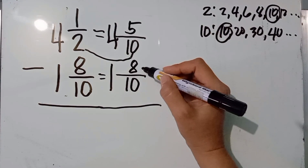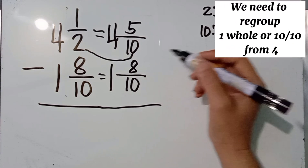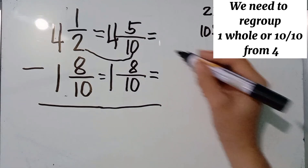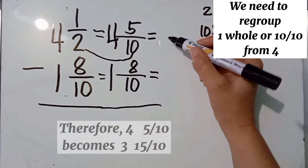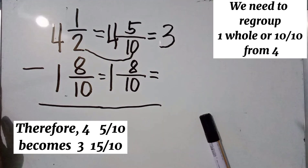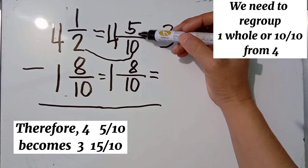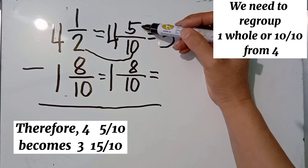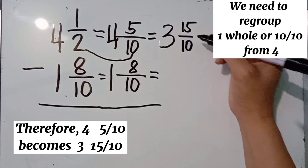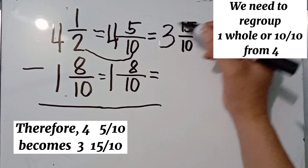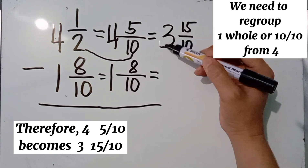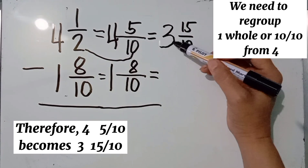5 minus 8 cannot be done, so we are going to regroup. We borrow one whole number from 4, so 4 becomes 3. We then add the numerator and the denominator: 5 plus 10 equals 15. Copy the denominator 10. We borrowed 1 from 4, so it became 3, and 5 plus 10 became 15.